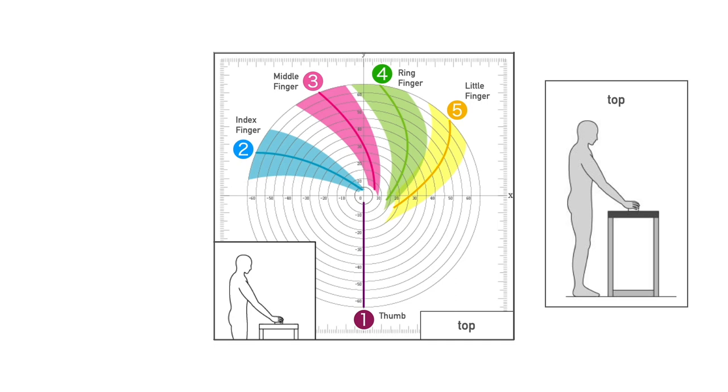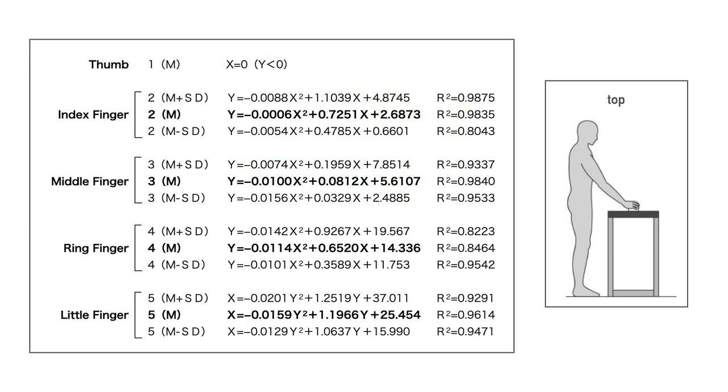In the top setting, the touch points of the fingers transition as shown. This is the top view of the knob. All curves can be represented by simple quadratic curves, and anyone can reproduce them. These are the formulas for the top setting.